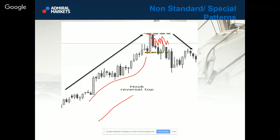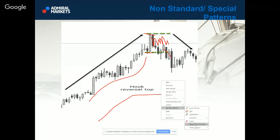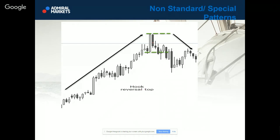You have an uptrend, you have sideways movement, and there is a hook here. The price actually made a lower high. If this was a high here, we now have a lower low. This candle is a lower high, which is followed by a lower low. So this is high, this is low, this is lower high, and this is lower low. Then you can say, okay, this is indeed a reversal — but how far can it go?